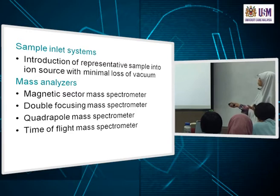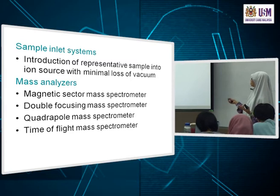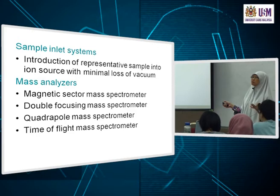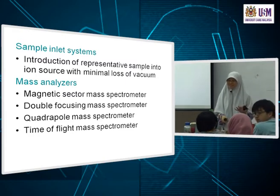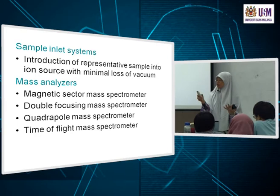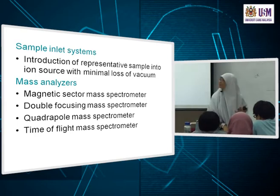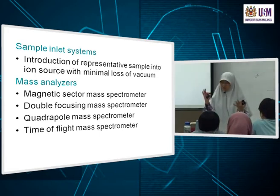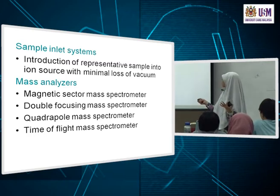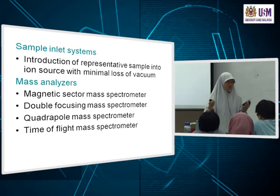The mass analyzer we have is the quadrupole, and most GC mass specs are also based on the quadrupole. The more expensive type is the magnetic sector or double focusing. These different mass analyzers separate different masses through different mechanisms.